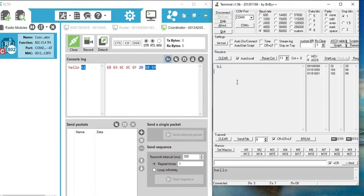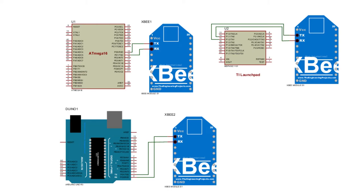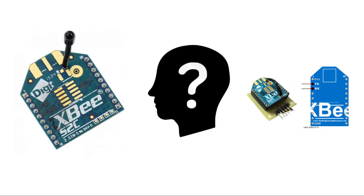Now you can use these XBees for your wireless communication. Both can transmit and receive data from one another. Just connect the RX/TX pins of the XBee to another microcontroller's RX/TX pins and you can send any data from one end to another.